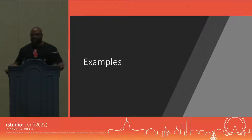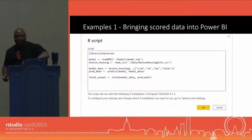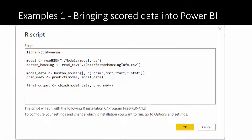Now let's talk about some examples. The first is a simple machine learning example using the Boston Housing dataset — a dataset you're probably familiar with if you've studied any type of data science. It's a simple illustration of how you can take a model saved in an RDS file on disk, consume that model and the data needed for scoring, and then, just as you would in any other R workflow, use that model with new data to score it and present that data to Power BI as a dataset.